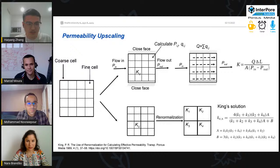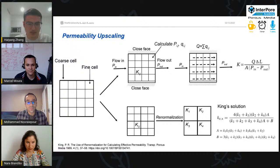But the renormalization method gives an analytical expression to calculate the effective permeability. For example, the effective permeability of these four blocks can be calculated by King's solution expressed in this equation. And we will use 3D renormalization methods in our study.